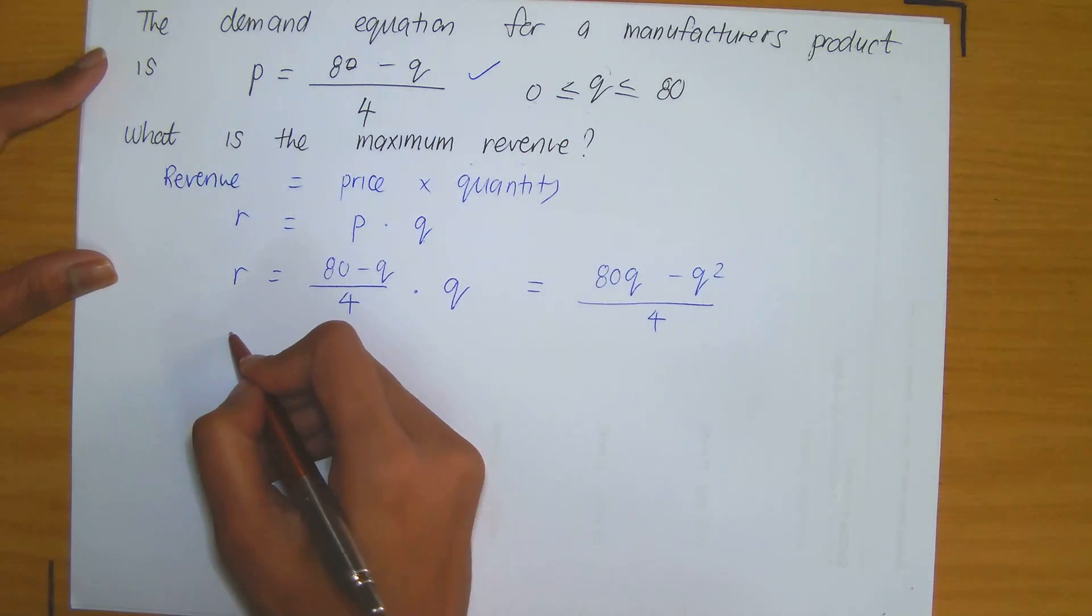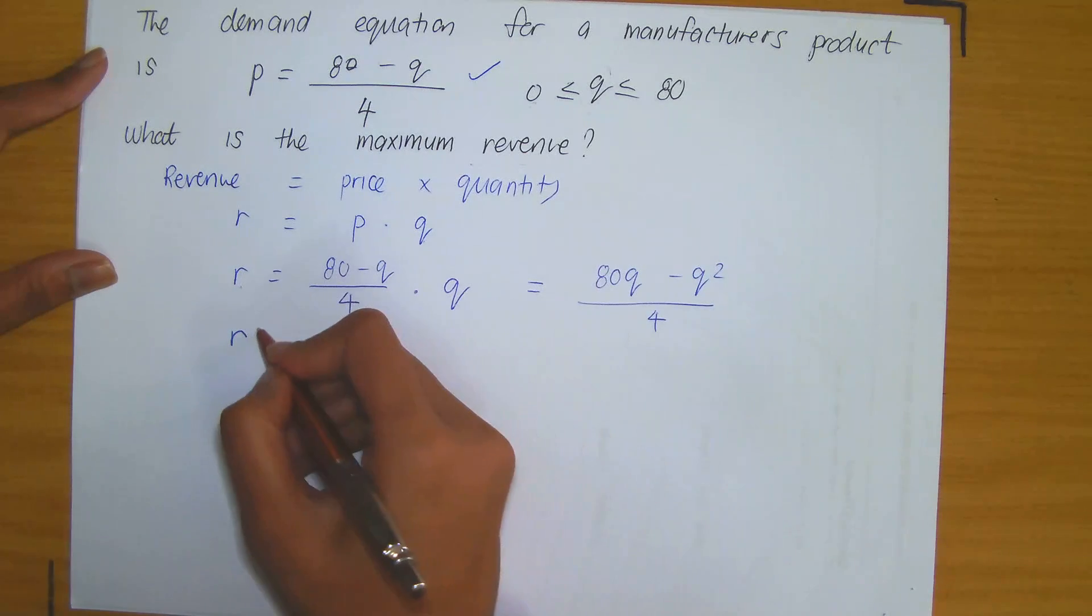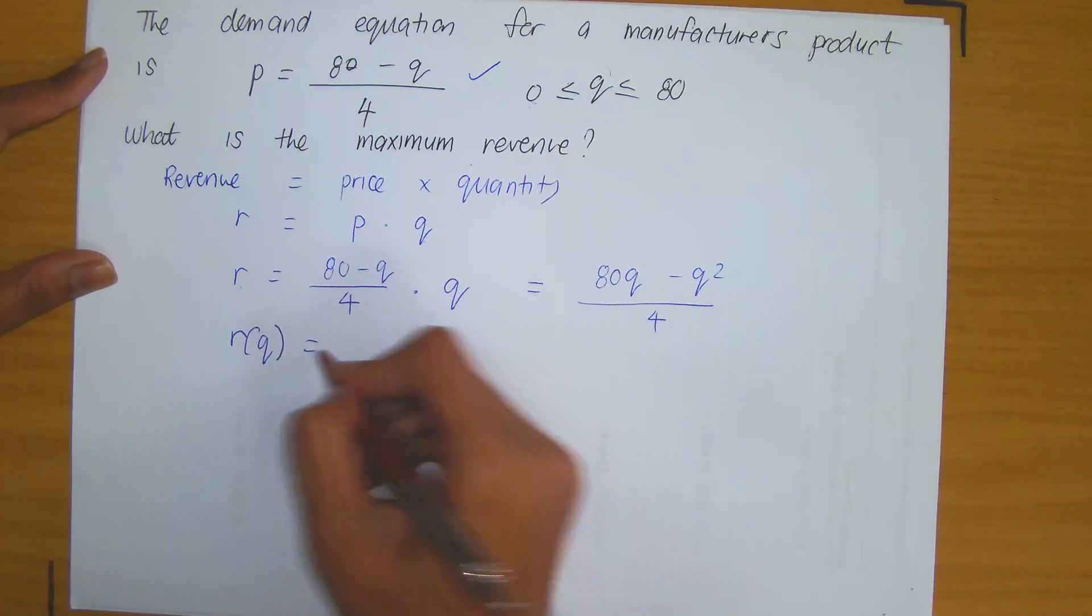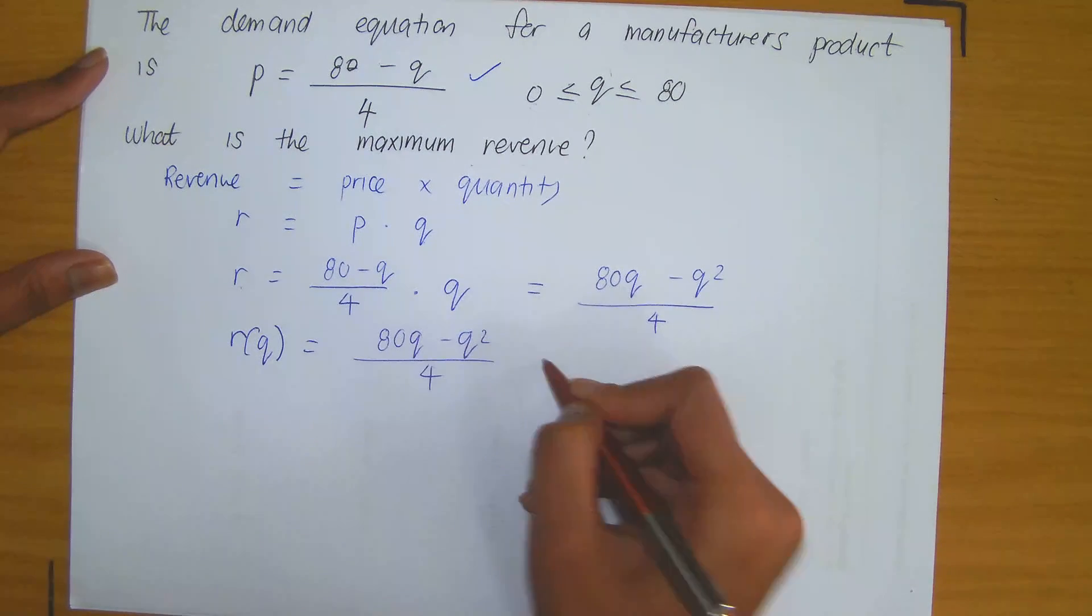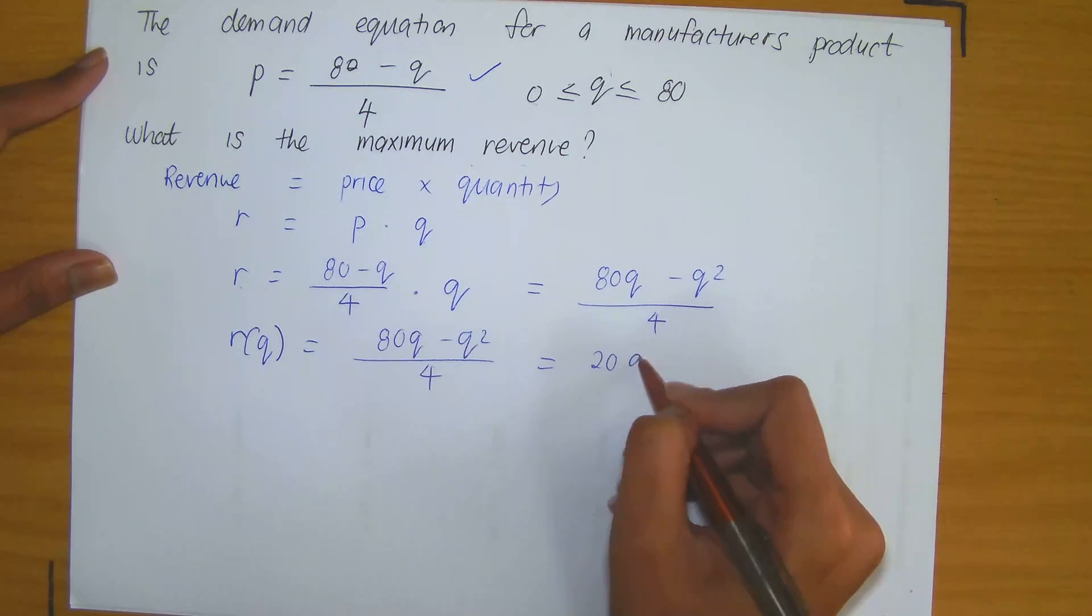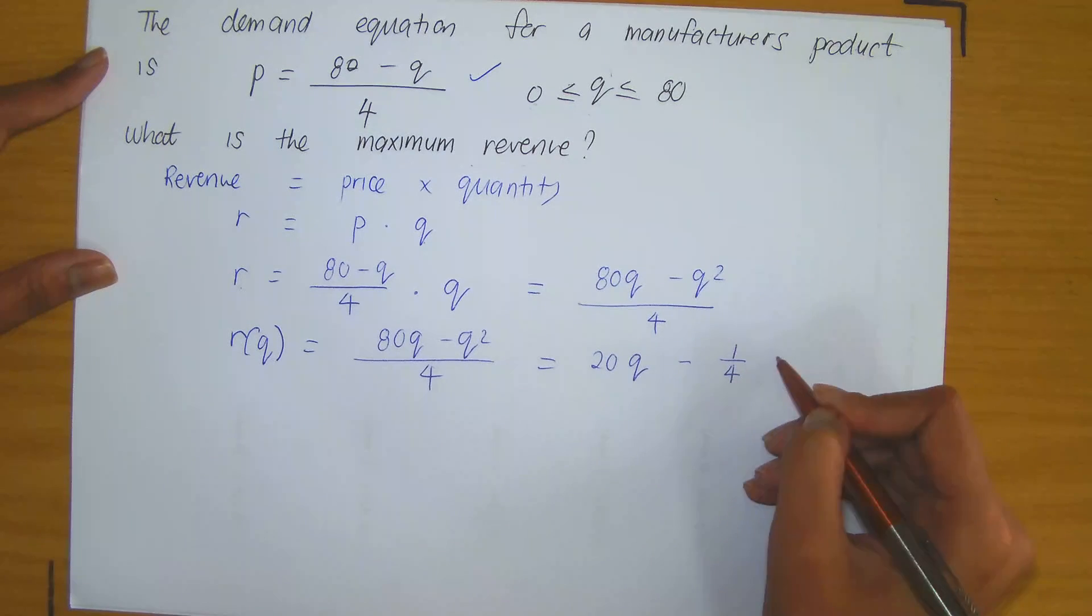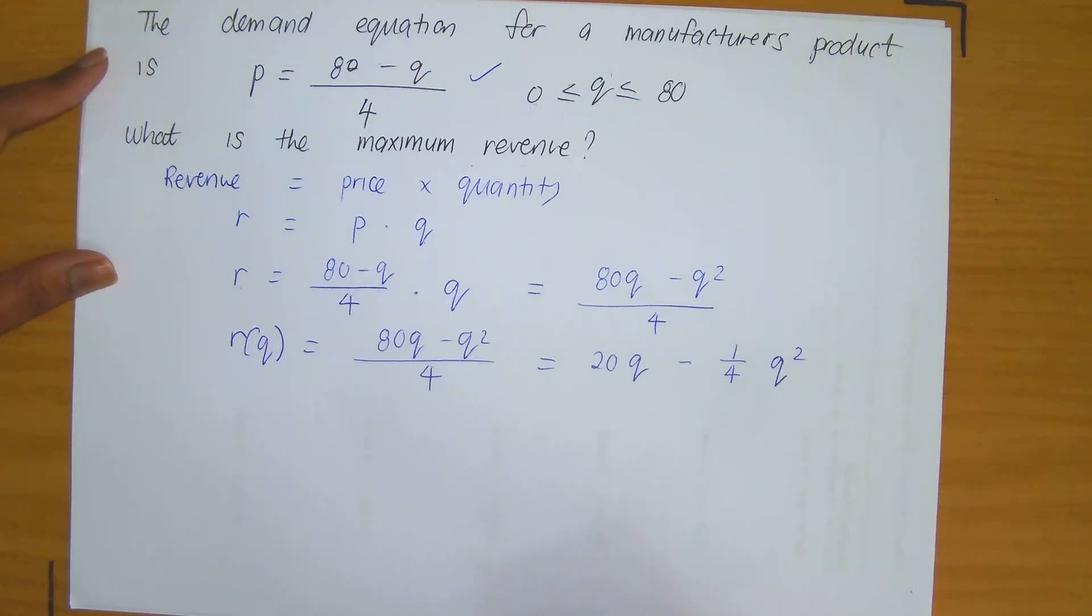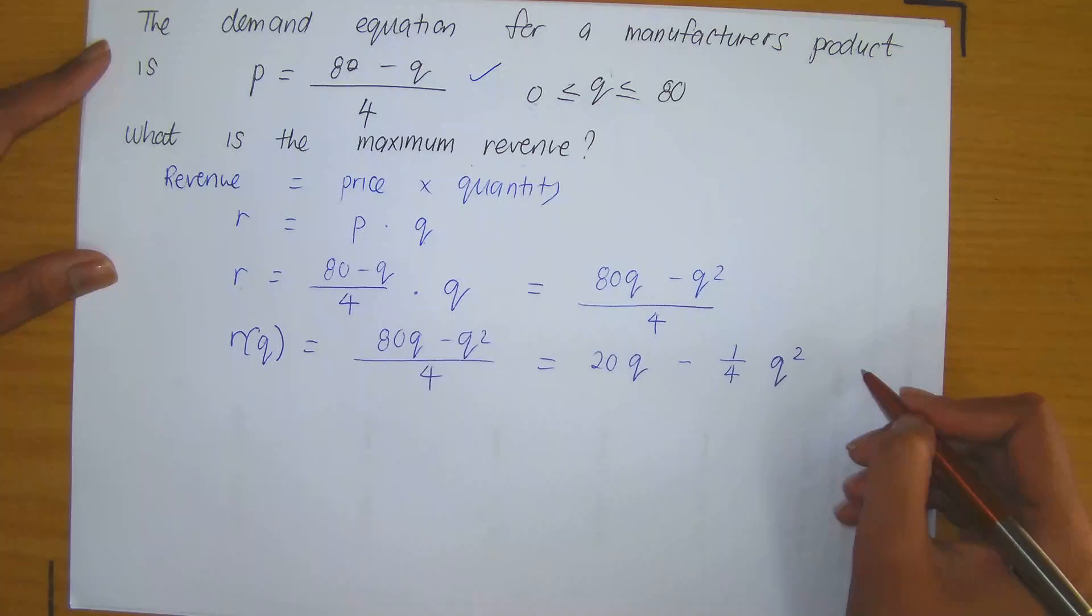So now observe that step three has been satisfied, because R, revenue, is now a function of quantity. So I can rewrite it like that: 80Q minus Q squared divided by 4. And now I can simplify this: 80Q divided by 4 is 20 times Q minus Q squared divided by 4, I can rewrite that as minus a quarter Q squared. And we know that Q is bounded by 0 and 80. So we've got a domain for our function.